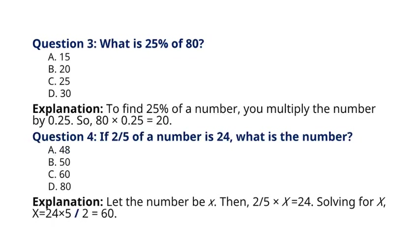Question 3. What is 25% of 80? A. 15, B. 20, C. 25, D. 30. Explanation: To find 25% of a number, you multiply the number by 0.25. So, 80 multiplied by 0.25 is equal to 20. The correct answer to question 3 is option B. 20.